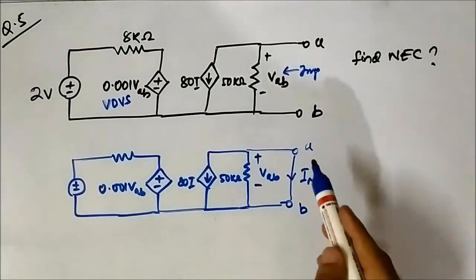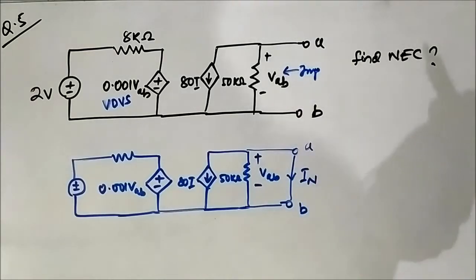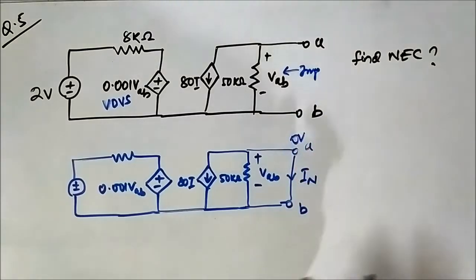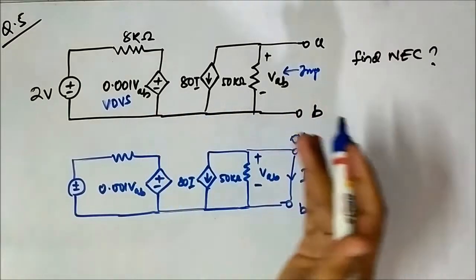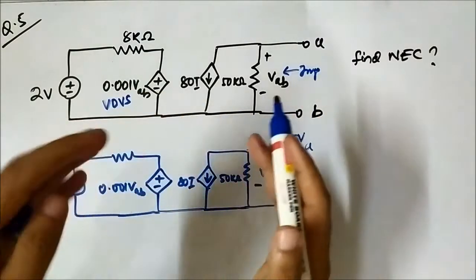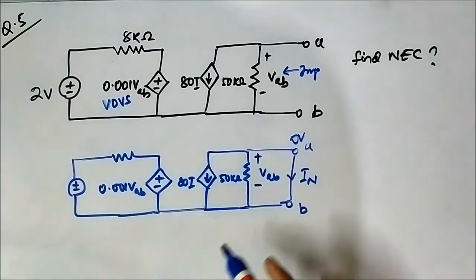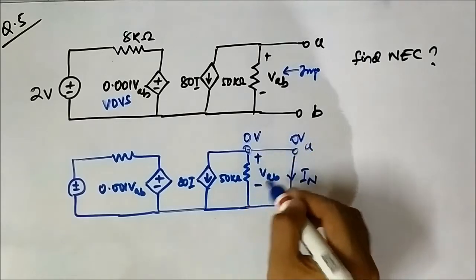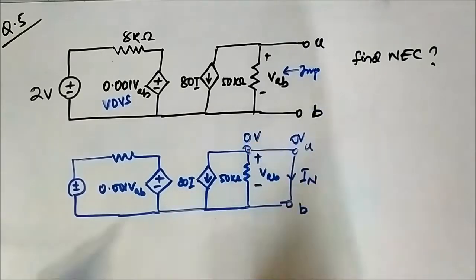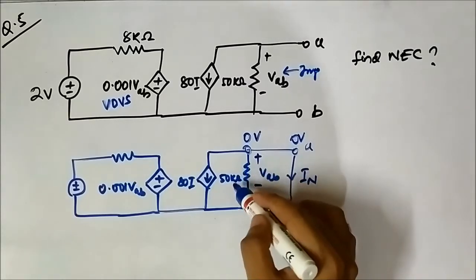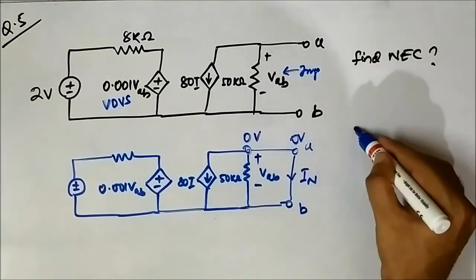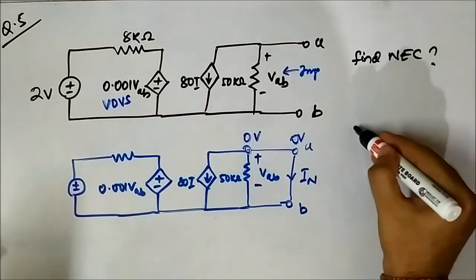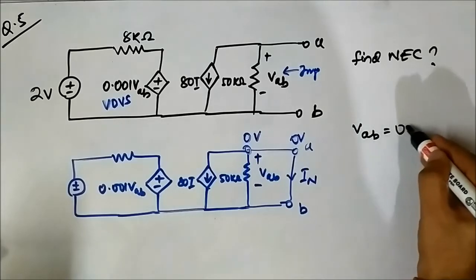Here it becomes interesting. The moment these two terminals get short-circuited, there is zero voltage across these two terminals, and the same zero voltage appears across all elements in parallel. Here it is zero volt, and here also it is zero volt. As here it is zero volt, the voltage across this 50 kilo-ohm resistor VAB becomes zero volt.